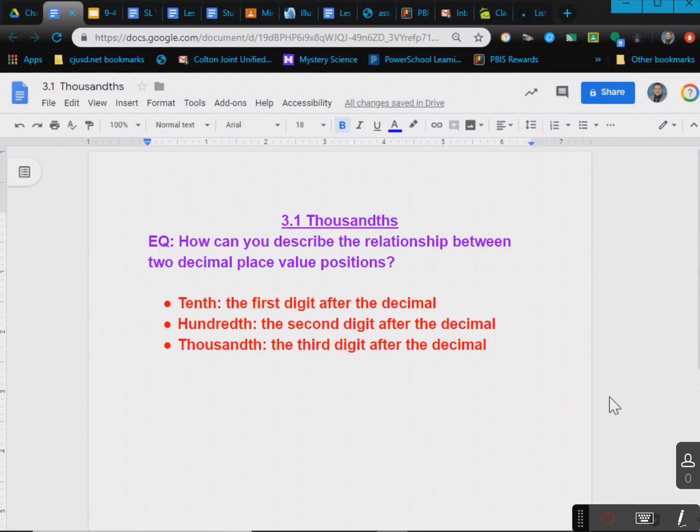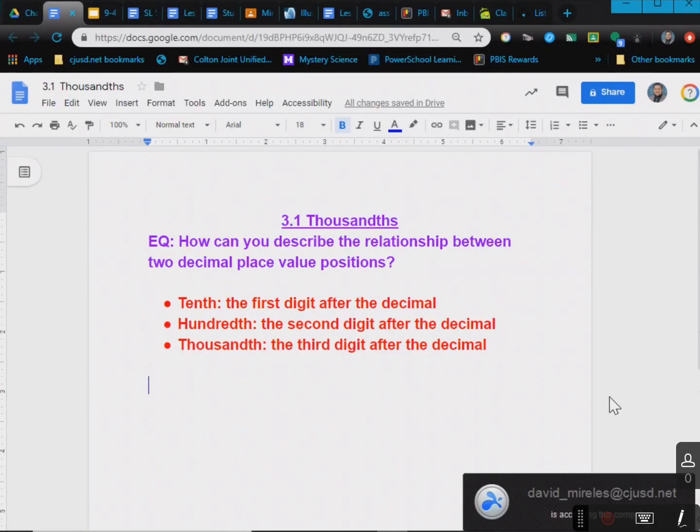Hello everyone, welcome to 3.1 thousandths. We're going to go forward a little bit because I really want to go over this concept. I don't think it's a difficult concept, but it's one that you need to be aware of. So the essential question is: how can you describe the relationship between two decimal place value positions?